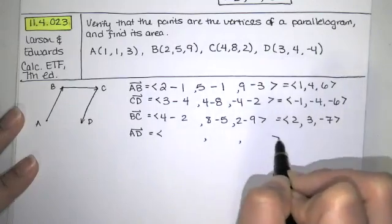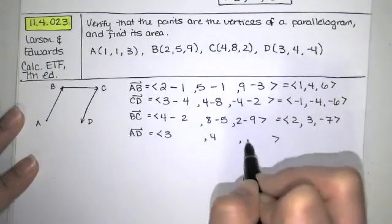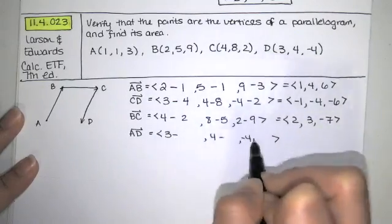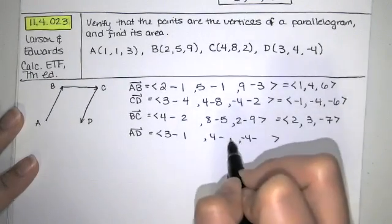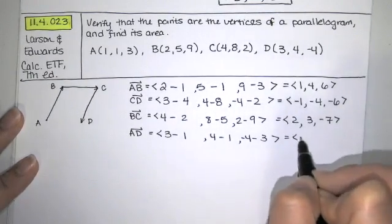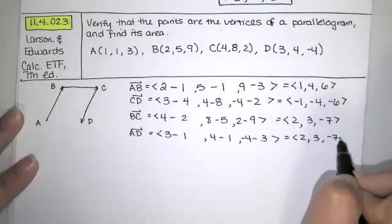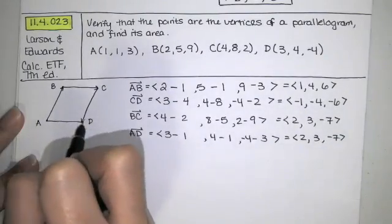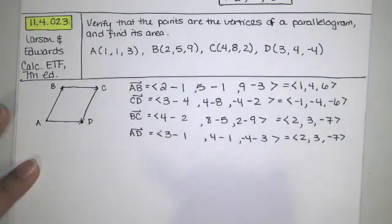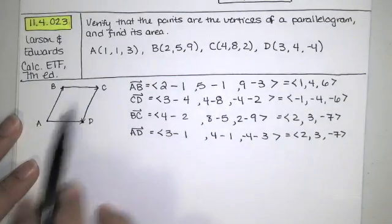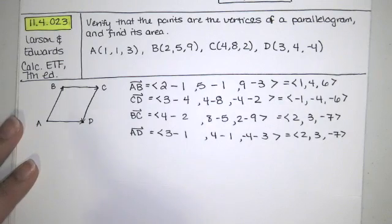Let's look at the vector from A to D now. Take the coordinates of D and subtract the coordinates of A. So we get 2, 3, and negative 7. So those are parallel to each other, and they're actually exactly the same vector. So if these are parallel and these are parallel, we do have a parallelogram.